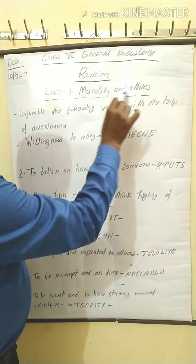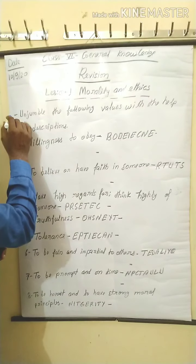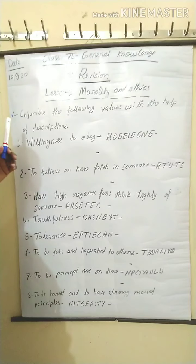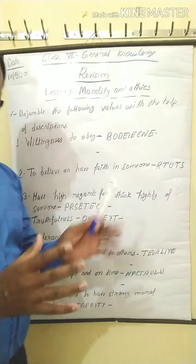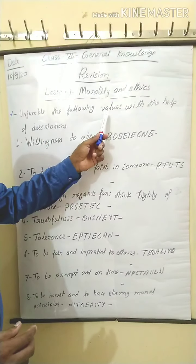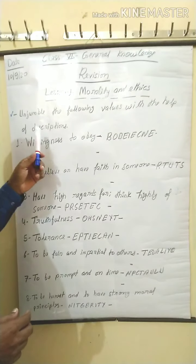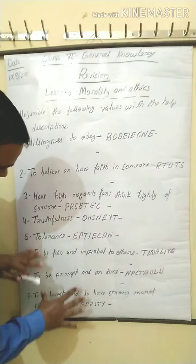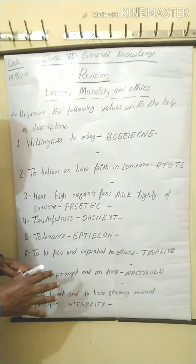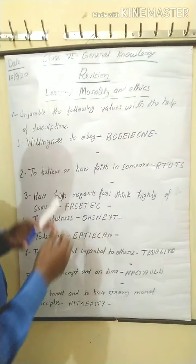Lesson first: Morality and Ethics. In the first chapter, see here — I am solving the exercise of lesson 1. Unjumble the following values with the help of descriptions. Here descriptions are given; with the help of descriptions, find out the moral value. And here a jumbled word is given.